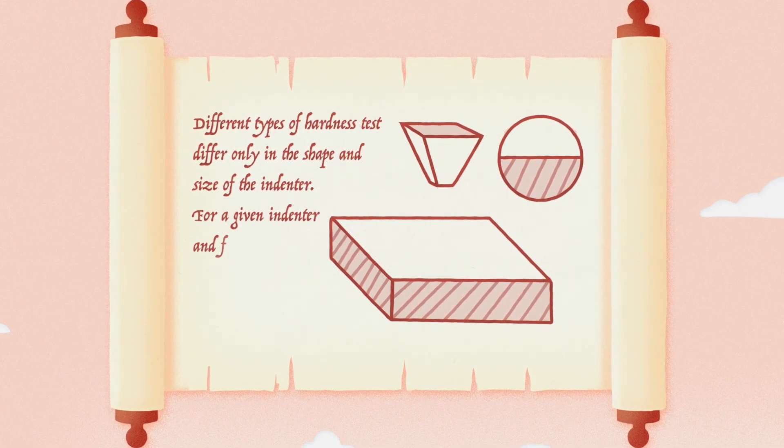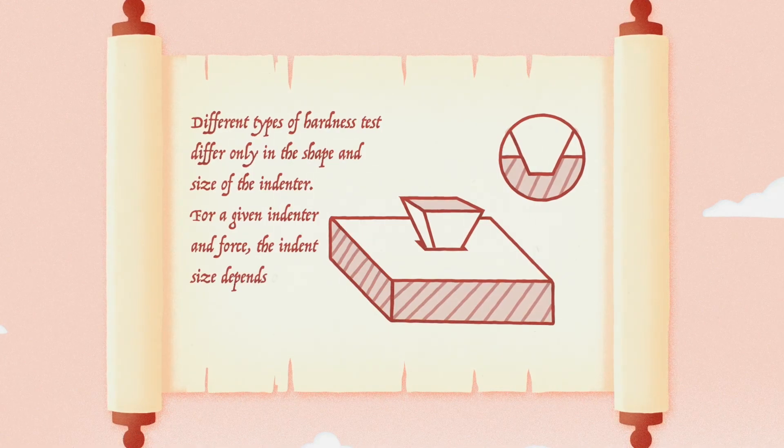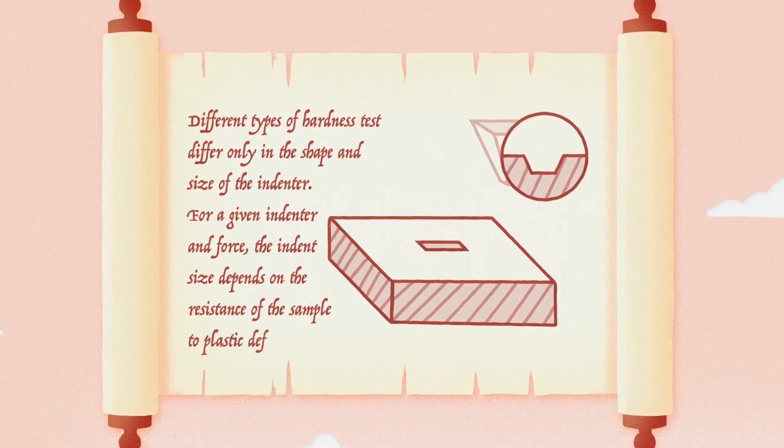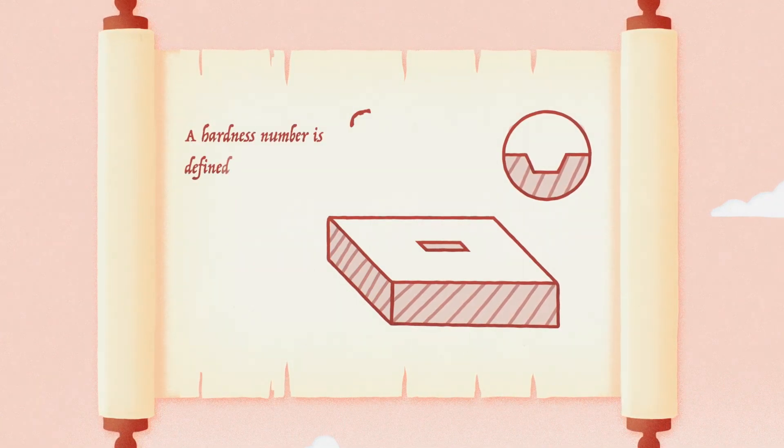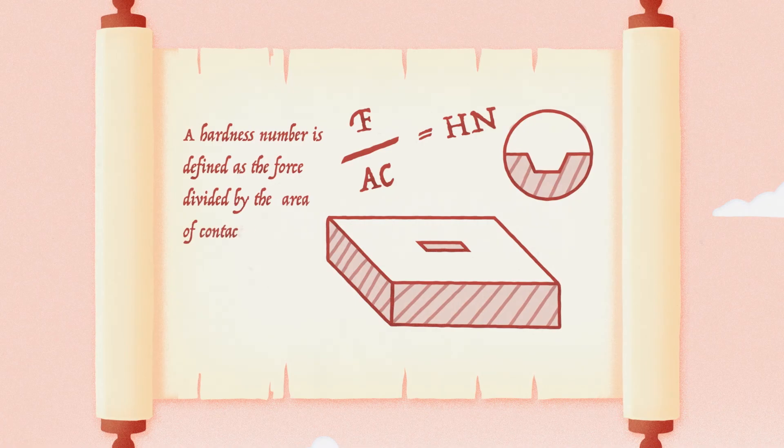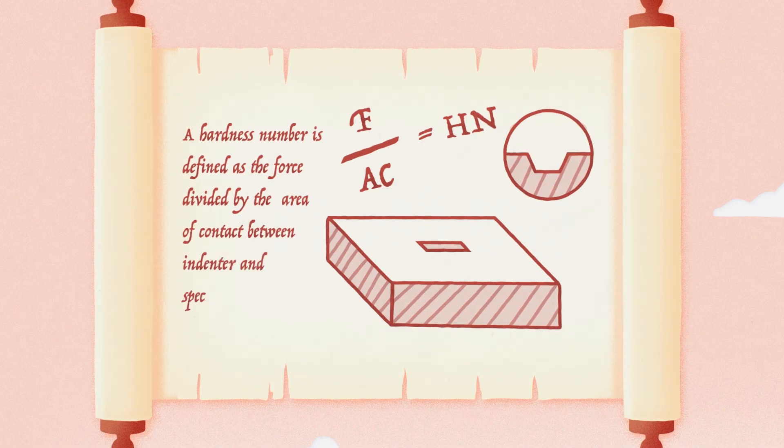For a given indenter and force, the indent size depends on the resistance of the sample to plastic deformation. A hardness number is defined as the force divided by the area of contact between indenter and specimen.